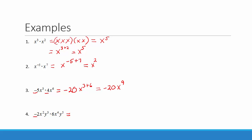Again we multiply the coefficients: negative 2 times 6 is equal to negative 12. Then we add exponents on like bases. For x, we add 2 plus 4. For y, we add 3 plus 5. Negative 12 is our coefficient, 2 plus 4 is 6 so our exponent on x is 6, and 3 plus 5 is 8 so our exponent on y is 8.